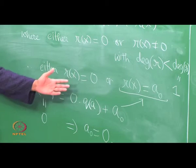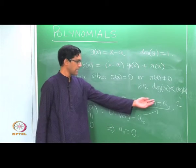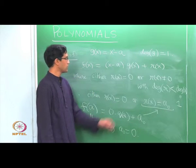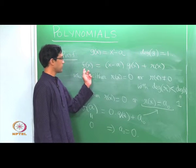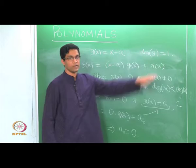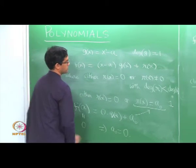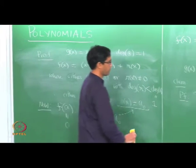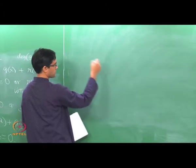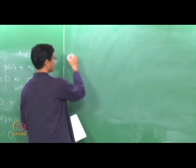So the remainder cannot really be a non-zero constant — we conclude that the remainder is 0. That tells us that f(x) is just (x − a) times q(x), with no remainder term. That is exactly what we wanted to conclude. So that is the first application; we have just completed the proof.